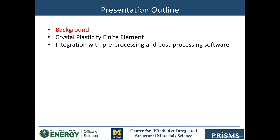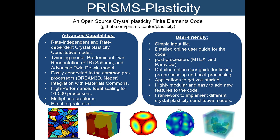Let's start with a brief background. Prism's Plasticity, as an open-source crystal plasticity finite element software, has some advanced capabilities. It has both rate-independent and rate-dependent crystal plasticity models. It has two twinning models: one simple predominant twin reorientation PTR scheme, and another advanced twin-detwin model. It can be easily connected to common preprocessors Dream3D and Napper, and it can be integrated with Materials Commons. It's high-performance software with ideal scaling for 1,000 processors.